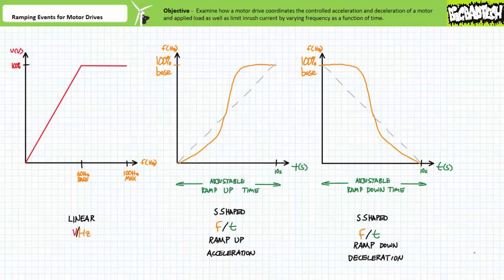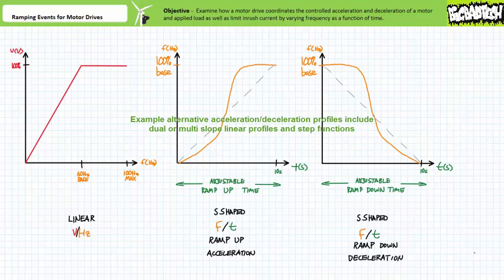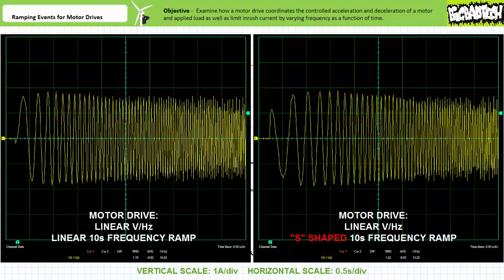Note that not all acceleration and deceleration frequency as a function of time patterns are linear. Consider, for example, an S-shaped frequency as a function of time profile. S-shaped curves are commonly used for applied loads that need to be briskly accelerated to high speed and then rapidly decelerated to a stop. The classic example of an S-shaped acceleration or deceleration profile is the feeling you might get in an elevator traveling between floors. A user can ordinarily customize the time it takes to execute the S-shaped acceleration or deceleration period. Depending upon the particular motor drive employed, more or fewer acceleration and deceleration patterns and options may be available for specific applications. A graph of line current for a motor drive using a linear volts per hertz ratio and a linear 10-second ramp-up time appears next to one employing a linear volts per hertz ratio and an S-shaped 10-second ramp-up time. The S-shaped acceleration profile shows frequency starts low and then rapidly transitions to full speed.